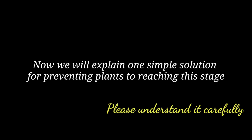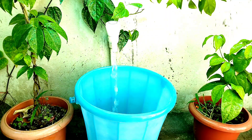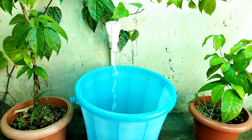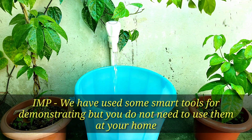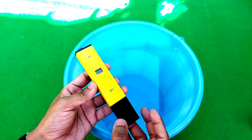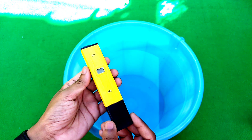Now we are going to explain one simple method for preventing our plants from reaching this stage, so please understand it carefully. First, we take the required amount of tap water in any container or bucket as we normally do. We will use some smart tools to help demonstrate this method. After taking the water, we will measure its pH value using a pH meter — please watch this process carefully.